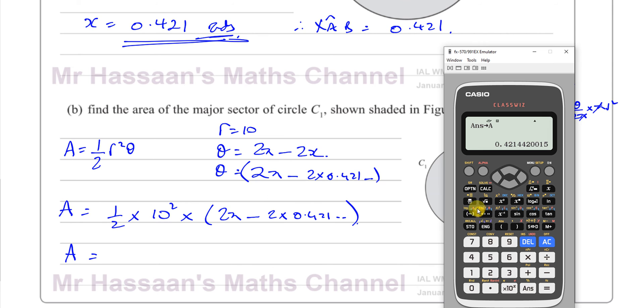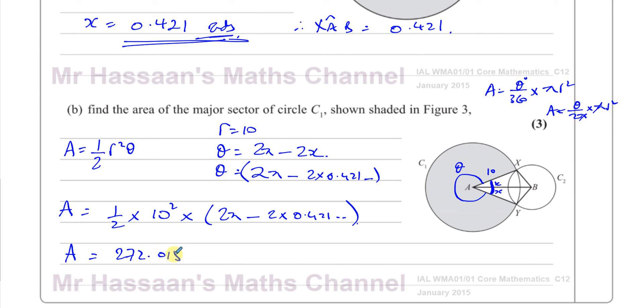I'm going to use ½ times 10 squared, which is 100, times 2π minus 2 times answer. That will give me the area of this sector, which is 272.015 centimeters squared. Therefore, the area to 3SF is 272 cm². That's the area of the major sector of C1 as shown shaded in the diagram. That's the answer to part B of this question.